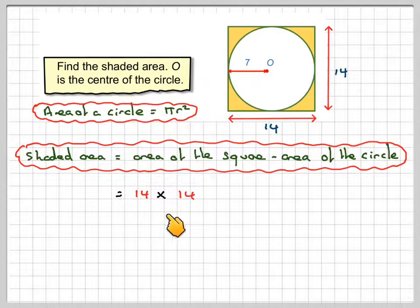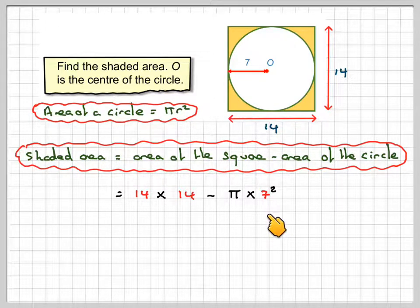So we need to work out 14 times 14 minus pi times 7 squared. 14 times 14 is 196. 7 squared is 49, so we minus 49 pi.